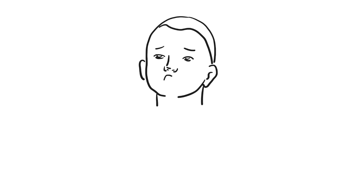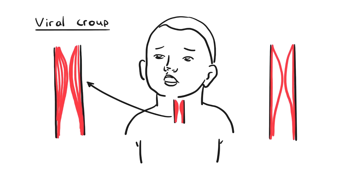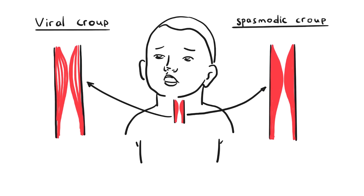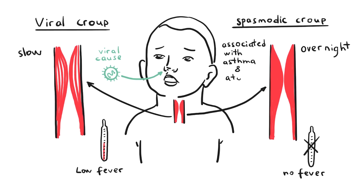Some children may have many episodes of croup and these children might be otherwise well, with the croup settling really quickly. This is probably called spasmodic croup. Spasmodic croup comes on rapidly overnight in children who were perfectly well when they went to sleep, often runs a shorter course, and is usually associated with asthma and atopy.